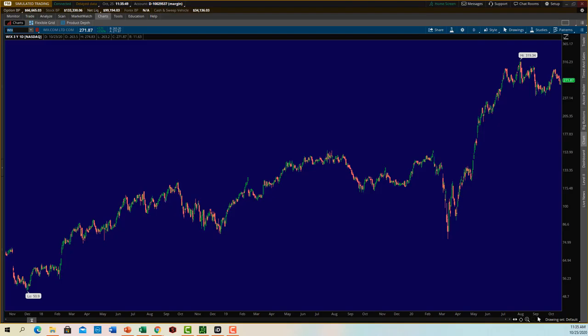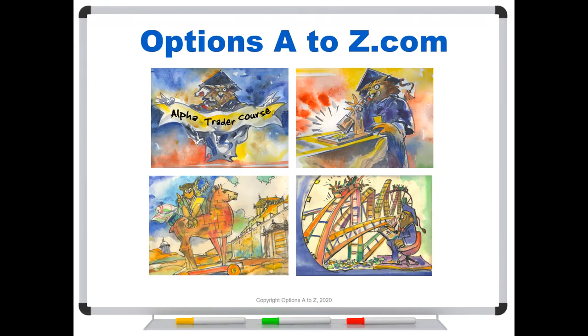So I hope that helps you to understand the basics of flags and pennants. And there are some other nuances to understand, but hopefully that's enough to get you started if you should see one forming on your chart. And for anyone who'd like to learn more about the arts and science of options trading, please check out the AlphaTrader course and Strategy Lab at optionsAtoZ.com. You can also instant message me right here in Facebook.